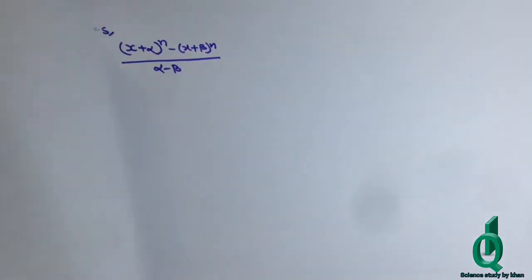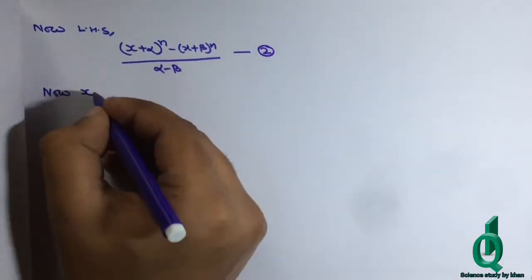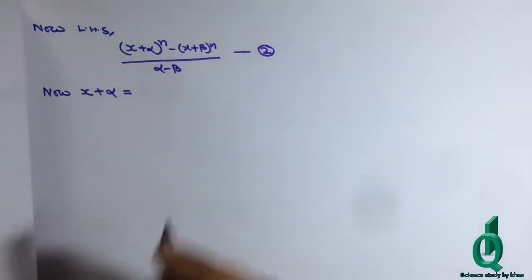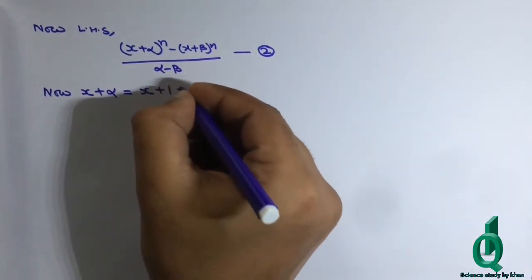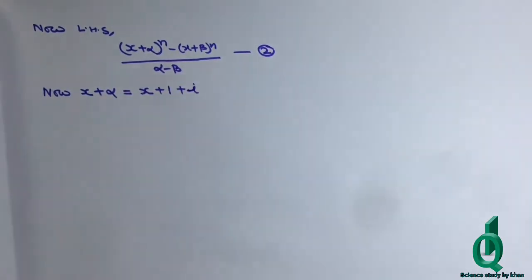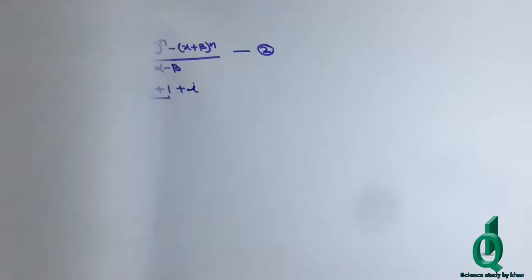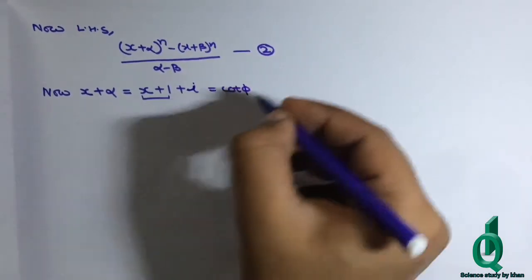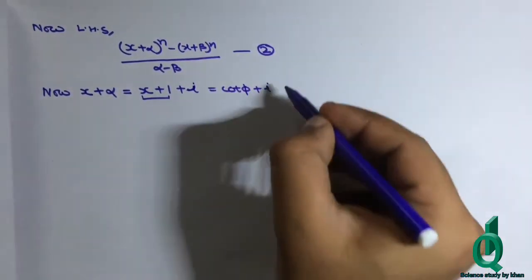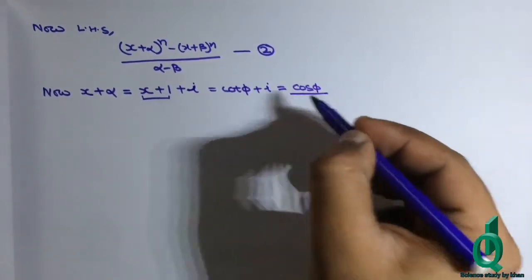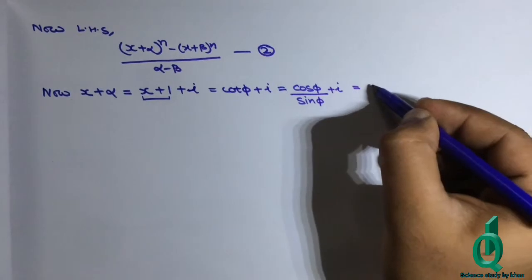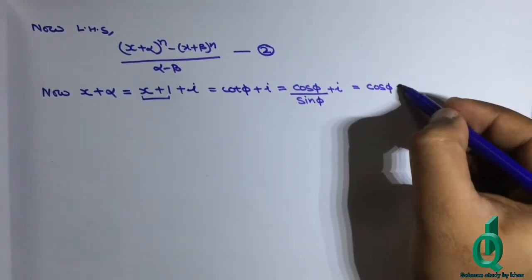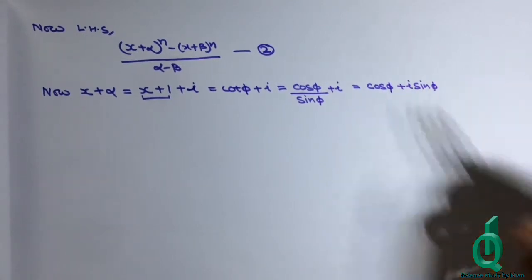x + α = x + (1 + iota). अब x + 1 हमें given है: cot(φ)। तो यह बन जाता है cot(φ) + iota। cot(φ) को हम cos(φ)/sin(φ) लिख सकते हैं, तो यह बनता है cos(φ)/sin(φ) + iota।